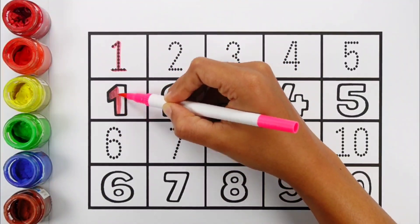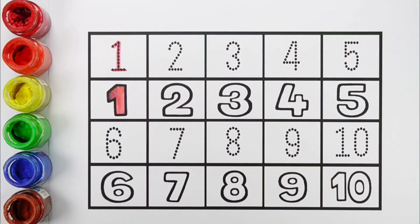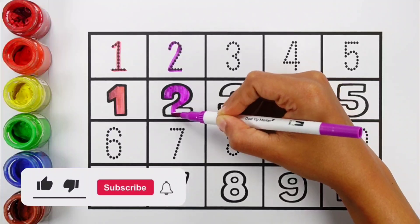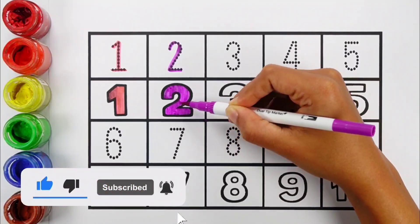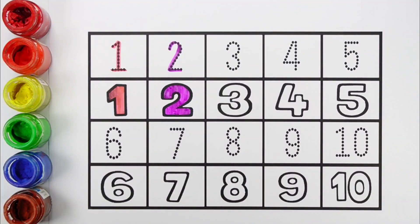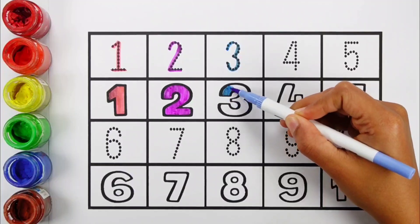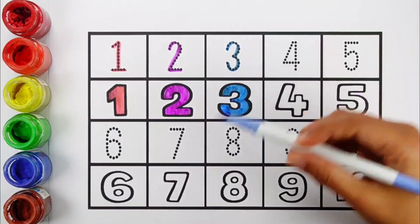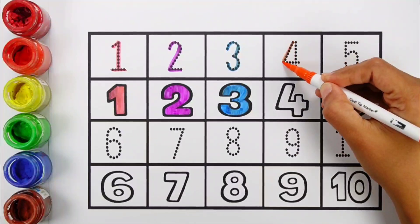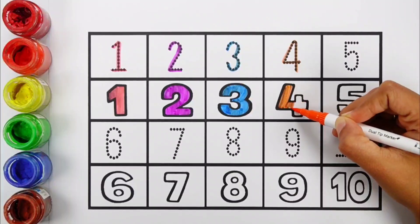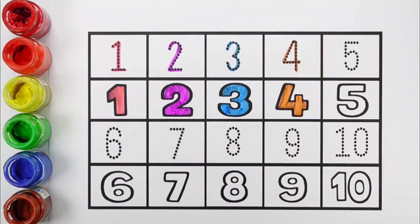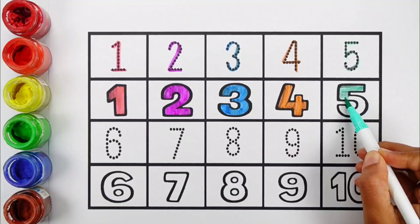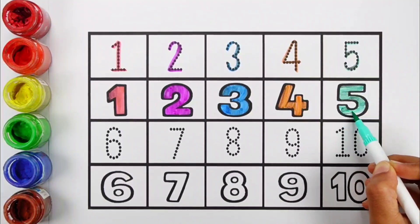Number one — pink color, 1. Number two — violet color, 2. Number three — blue color, 3. Number four — orange color, 4. Number five — mint blue color, 5.